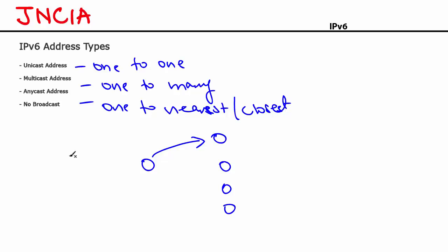Broadcast traffic has been completely eliminated in IPv6. So the three IPv6 address types are Unicast, Multicast, and Anycast.